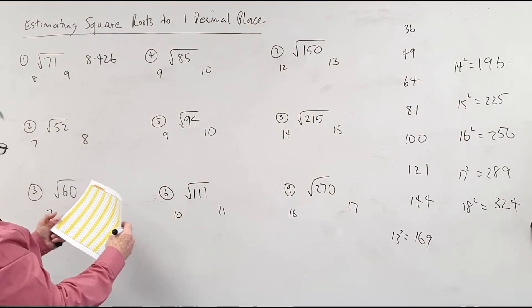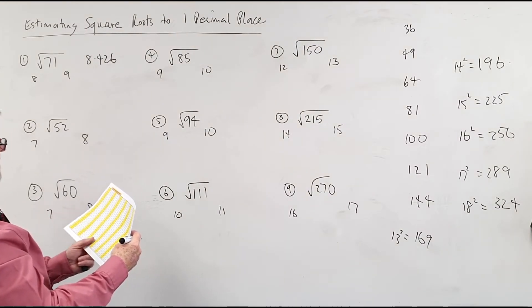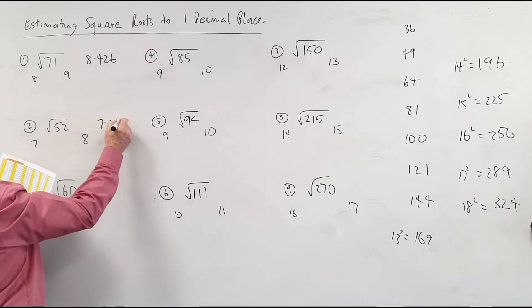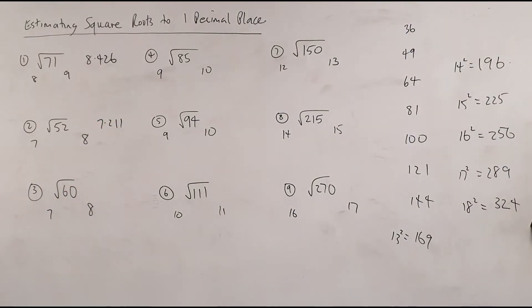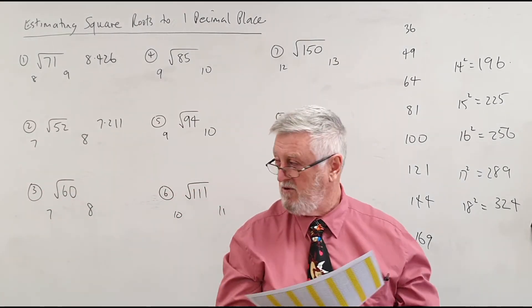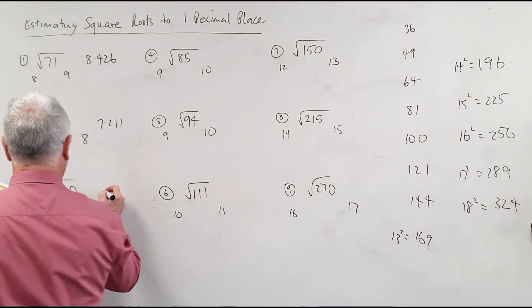Next one. Number 2 is 52. 7.211. 7.2? That's impressive. Anyone else that just went 7 or 8? That's good, you're getting better.